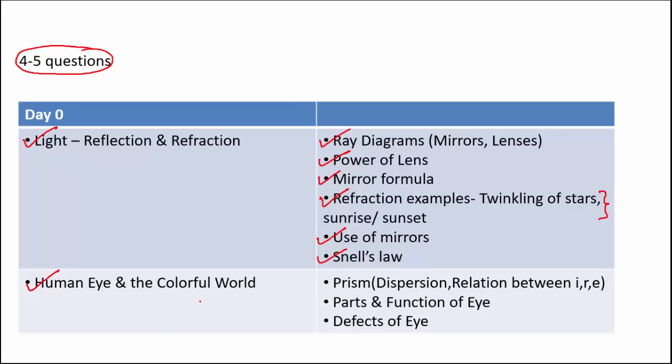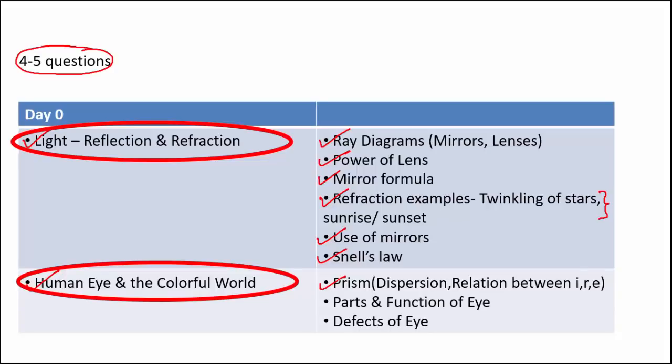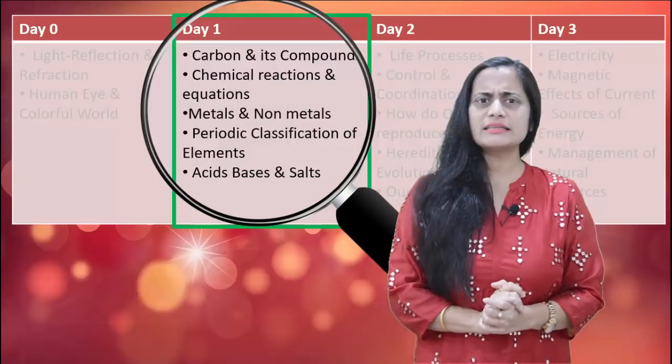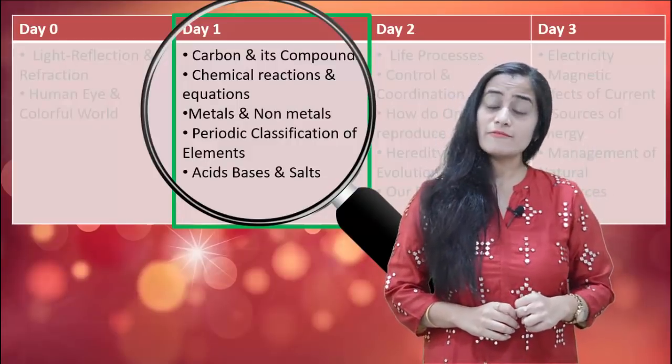When it comes to human eye and the colourful world, important topics include prism, the phenomenon of dispersion, parts and functions of the eye, defects of eye and the correction for each defect. I have kept the entire evening for only these 2 lessons so that you can thoroughly revise them. Both of these lessons are high priority lessons.